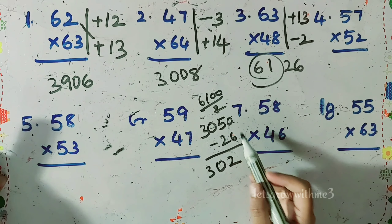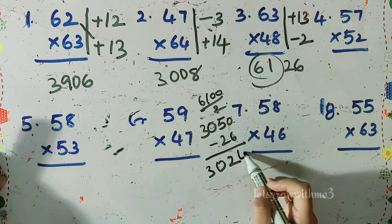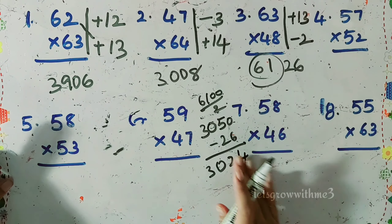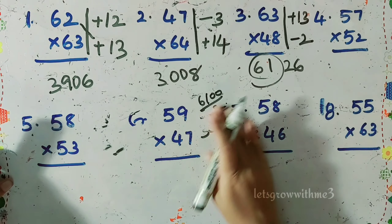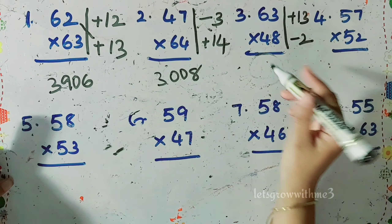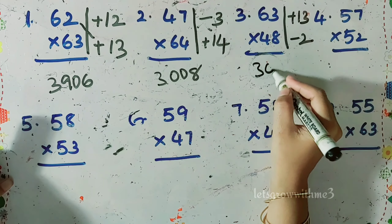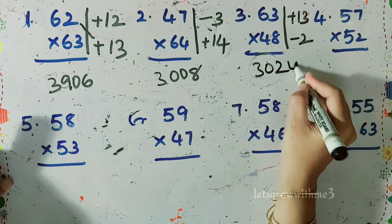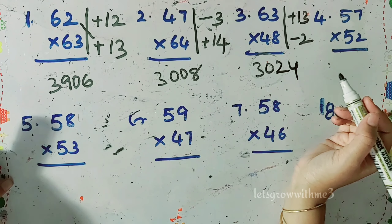3050 minus 26: 3050 minus 2 is 3, but because of borrow we write 2, then 4, giving the answer 3024.